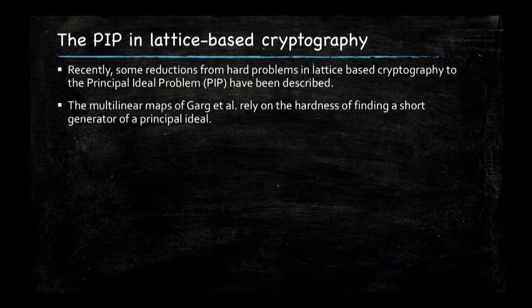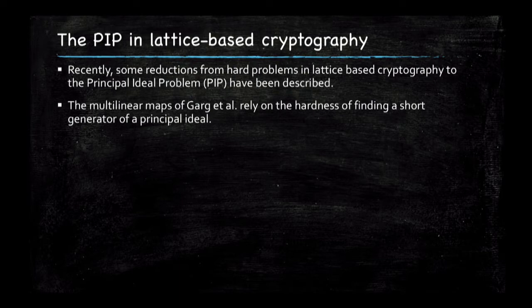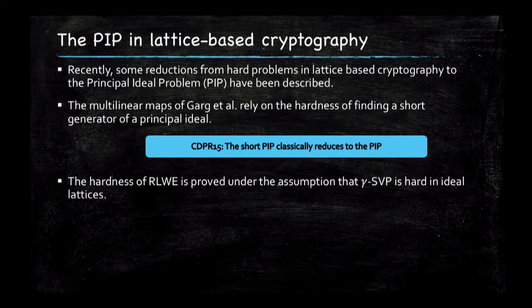People proposed those schemes because they would allow multipartite key exchange, and also to achieve fully homomorphic encryption, which is another crucial goal in cryptography. They also thought that because it was relying on lattices in high dimension, perhaps it was going to be quantum-safe. That didn't go well, because in recent work from Cramer, Ducas, Peikert, and Regev, it was shown that finding a short generator is not really that much harder than finding a generator, and finding a generator can be done in polynomial time with a quantum computer.